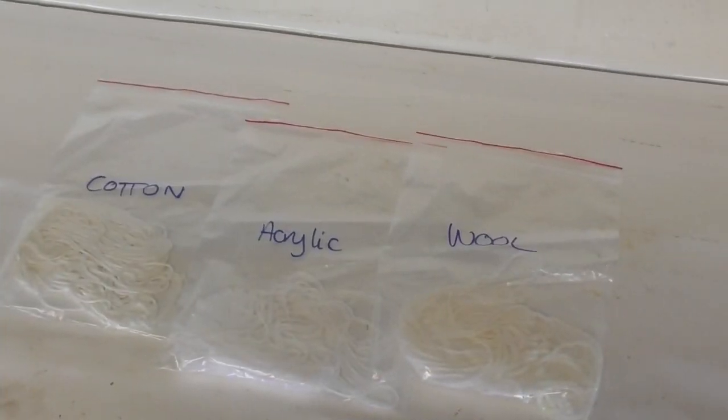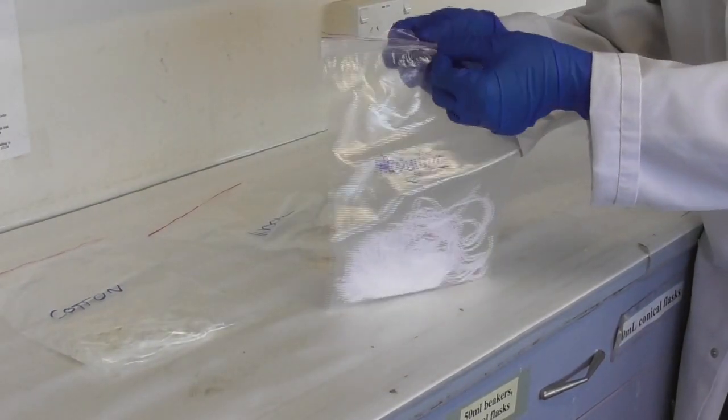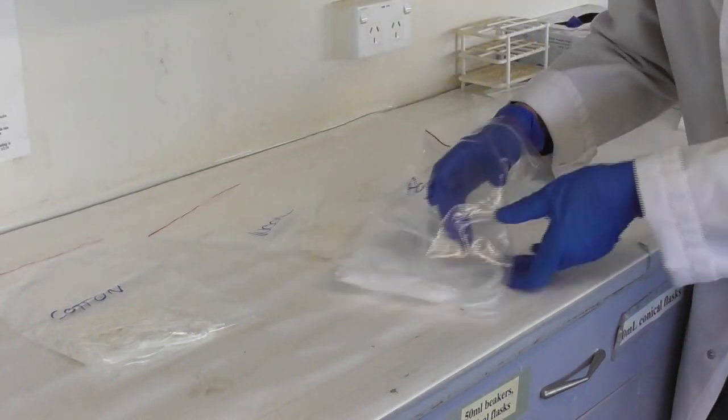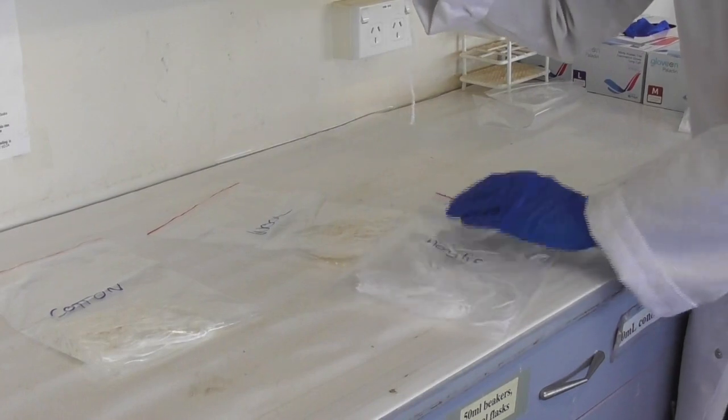We will investigate the fastening of three different types of string: cotton, acrylic and wool. We take out one piece of string at a time so as to not get confused between the different varieties.